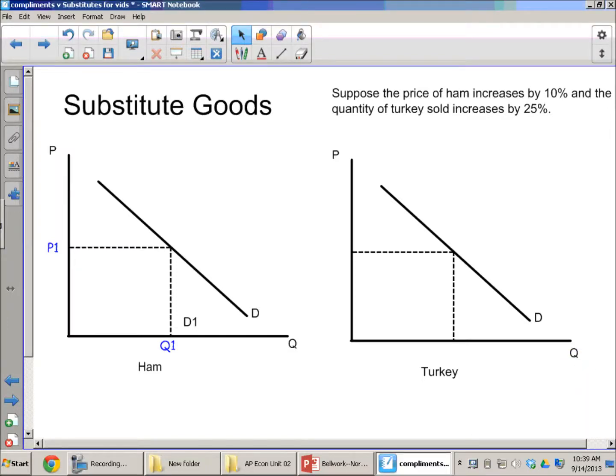Let's walk through a similar example with substitutes. We've already done the math, so I'll make this part a little bit simplistic. We have ham and we have turkey. Let's just say that the price of ham has gone up by 10%.